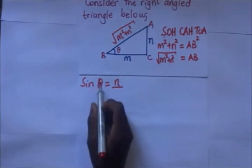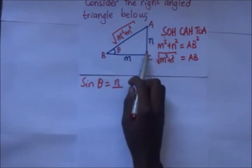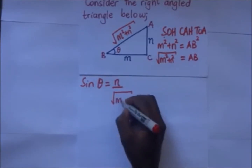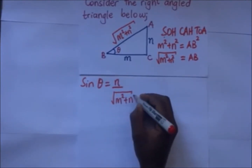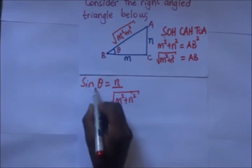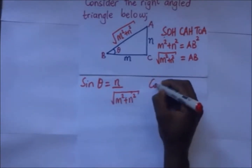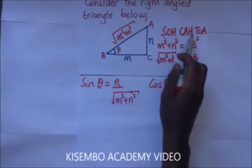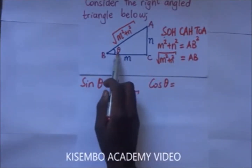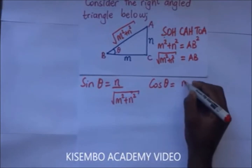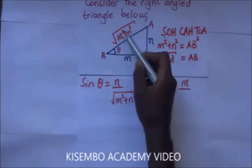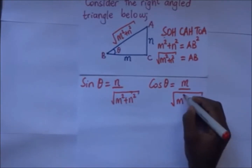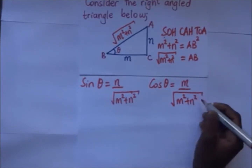So sine theta is going to be the opposite, which is N, over the hypotenuse, which is the square root of M squared plus N squared. The cosine of that same theta is simply adjacent over hypotenuse, so cos theta is M over the square root of M squared plus N squared.